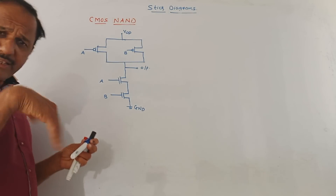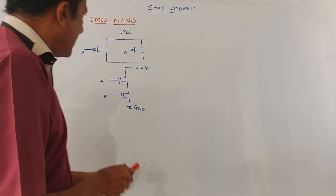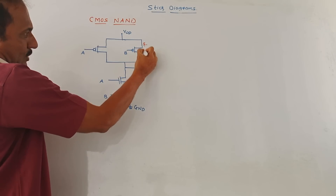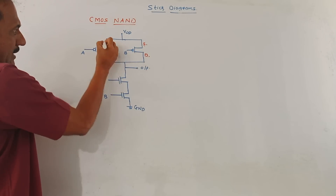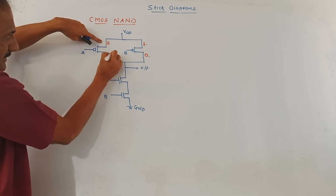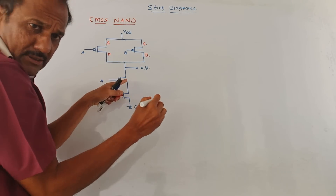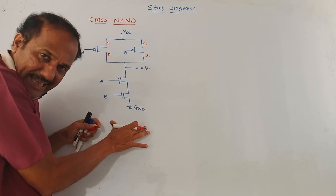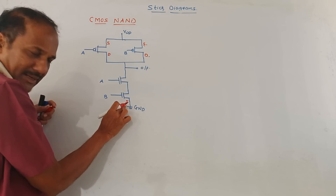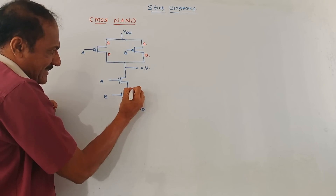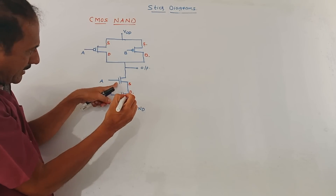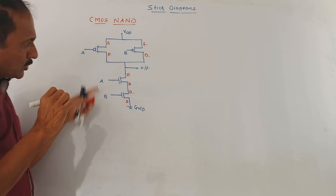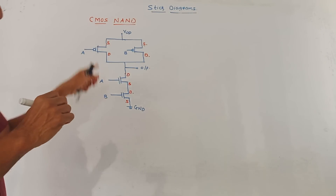Now we mark source and drain terminals on the NAND CMOS diagram. For PMOS, the upper part is source and the lower terminal is drain. For the PDN network where two N MOSFETs are connected in series: for N MOSFET B the lower terminal is source and upper is drain; for N MOSFET A the lower terminal is source and upper is drain. I have marked all source and drain terminals in the diagram.